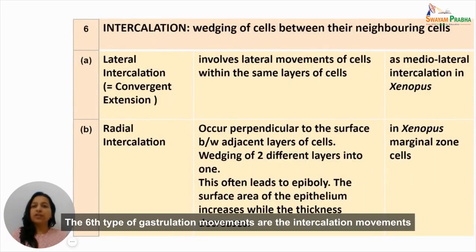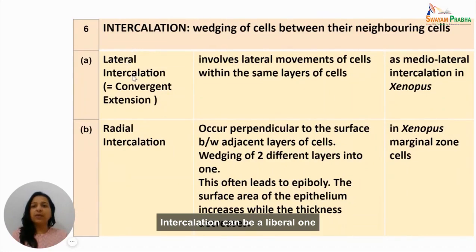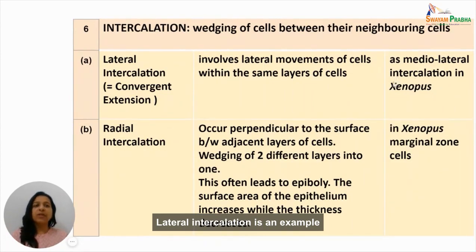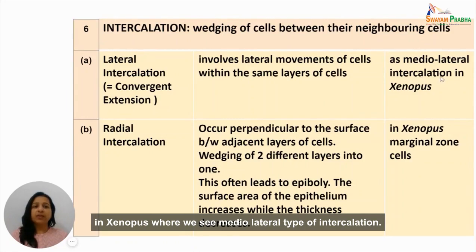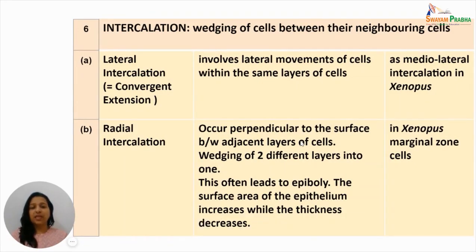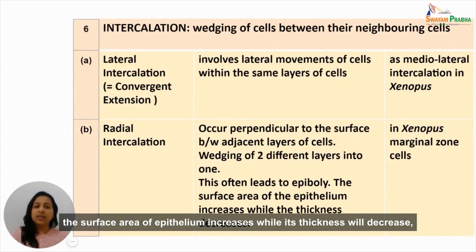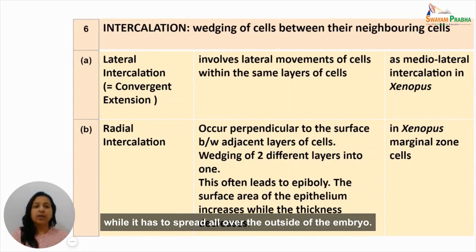The sixth type of gastrulation movements are the intercalation movements, which involve wedging of cells between their neighboring cells. Intercalation can be lateral — also known as convergent extension — or radial intercalation. Lateral intercalation involves sideways movement of cells within the same layer, as seen in Xenopus medial-lateral intercalation. Radial intercalation occurs perpendicular to the surface between adjacent layers and involves wedging of two different layers into one, often leading to epiboly. Radial intercalation is seen in Xenopus marginal zone cells.